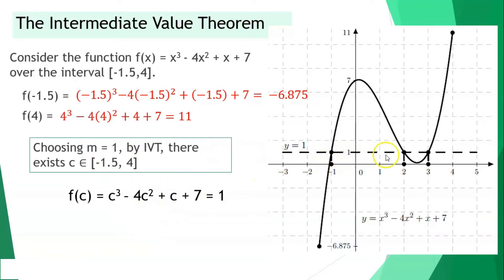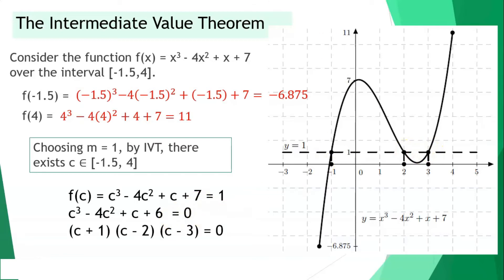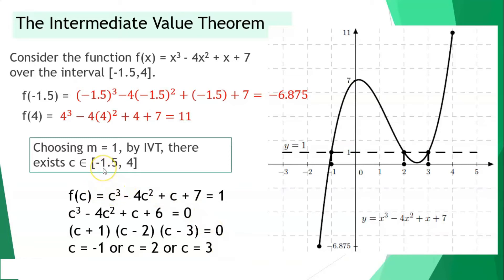We can identify the values here — since y is equal to 1, transferring 1 to the other side, 7 minus 1 becomes 6. The endpoints are at negative 1, at positive 2, and at positive 3. So we can rewrite the function in factored form as (c + 1)(c − 2)(c − 3) = 0. Our values for c are negative 1, positive 2, and positive 3, and all of these are within negative 1.5 until 4.